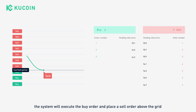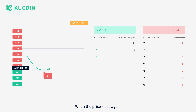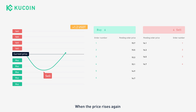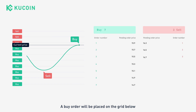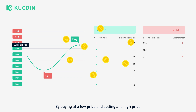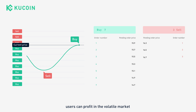When the price rises again, the sell order will be executed and a buy order will be placed on the grid below. By buying at a low price and selling at a high price, users can profit in a volatile market.